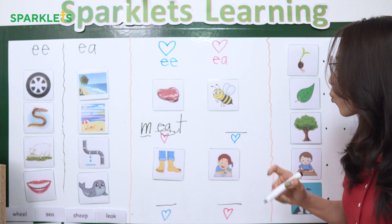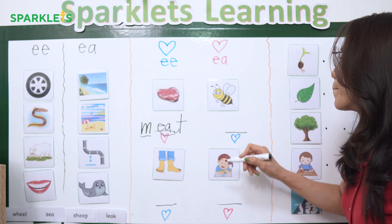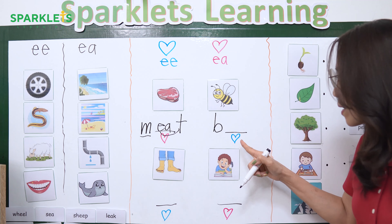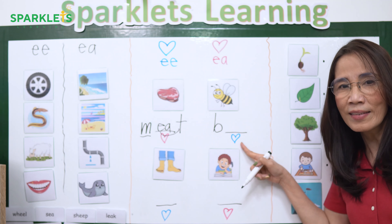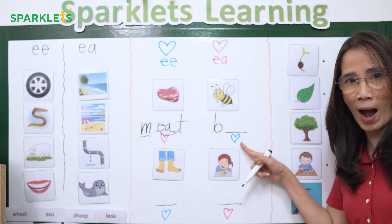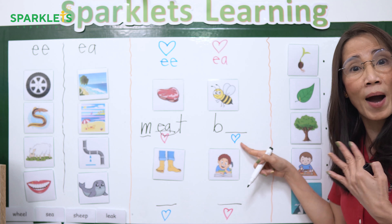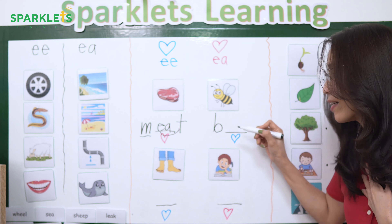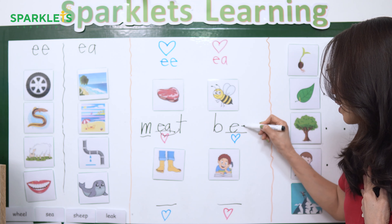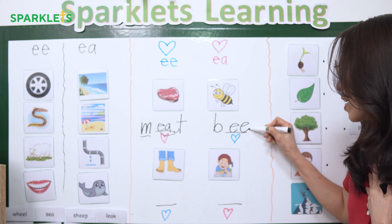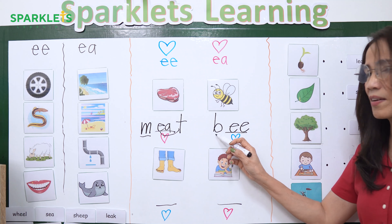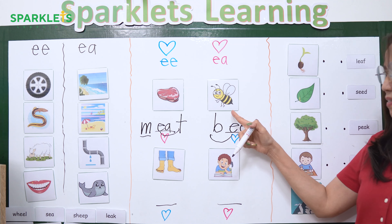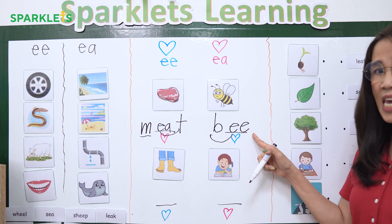How about this one? What is the beginning sound? B. You write B. And look, it's a blue heart. Since they already know by heart that blue is EE, they will be able to tell you that it is EE. So let them read again — B-EE. That's the spelling of bee. It's EE.